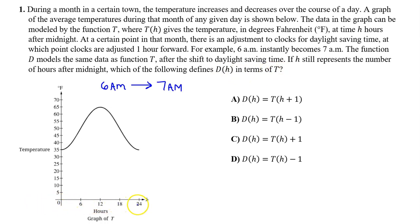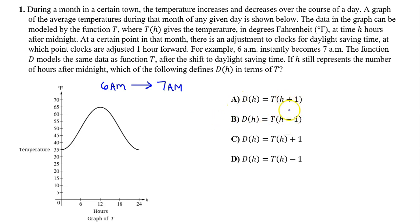Notice that time is on the x-axis. If, for example, 6am is suddenly going to shift to 7am, on the graph that's going to be a horizontal translation to the right one unit. Horizontal transformations appear on the inside of the function, so we're either talking about a or b. On the inside of the function, the transformations look the opposite of what they are. So a horizontal translation to the right by one will actually be represented by h minus one. So the answer is going to be b.